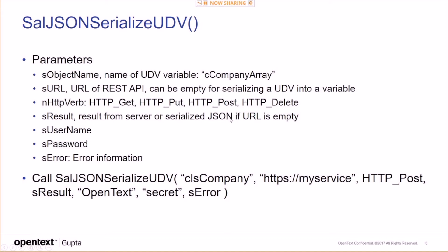If you do a GET, you will have the data returned. If you do a PUT, DELETE, or POST, then you will get a message back from the server, something like 'update has worked'. There's a username, a password, and also an error indication — a reply result and an error field.